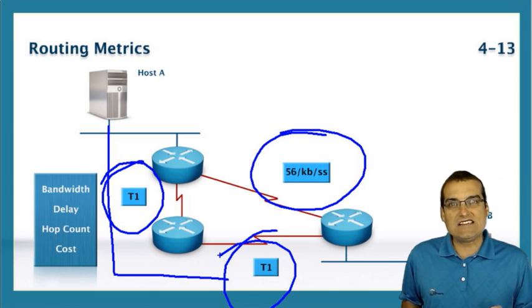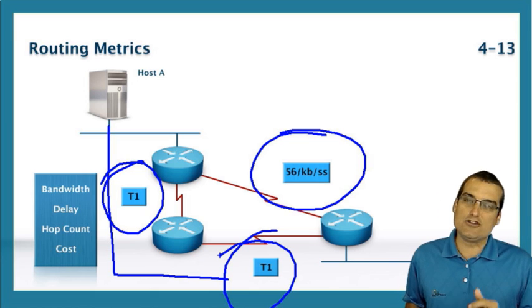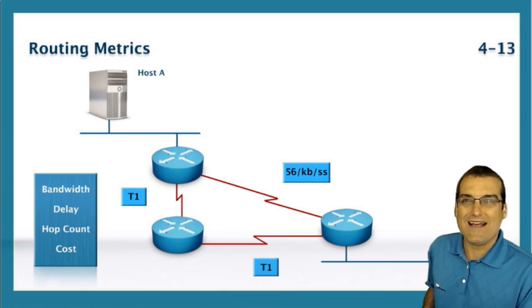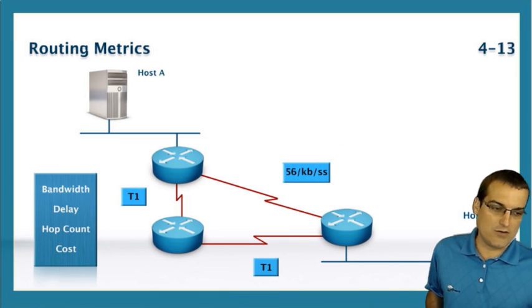So this simplistic RIP gets in trouble here with its metric of that simple hop count by not considering the bandwidth.